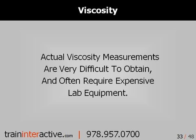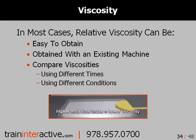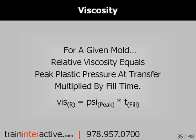Unless you work in a laboratory, few of you will actually need the viscosity data for your polymer. In most cases, relative viscosity can be pretty easy to obtain with an existing machine, and you can compare viscosities using different times or different conditions. The relative viscosity you're concerned with can be calculated by multiplying the peak plastic pressure at transfer times the first stage fill time. If your injection molding machine does not provide pressure at transfer, you can always use the peak first stage pressure. In either case, you should convert the hydraulic pressure to plastic pressure if it's not provided, to ensure that measurements from one machine are useful when compared to another machine.